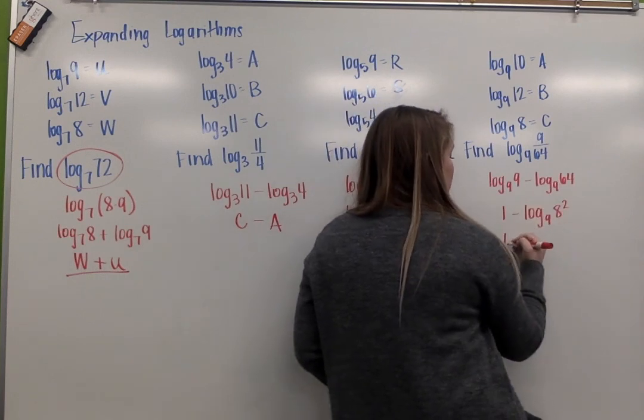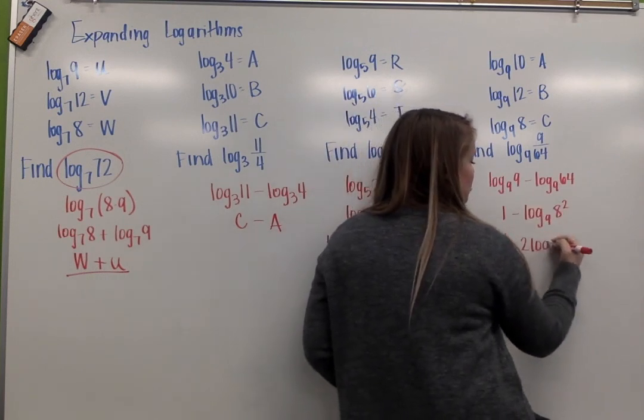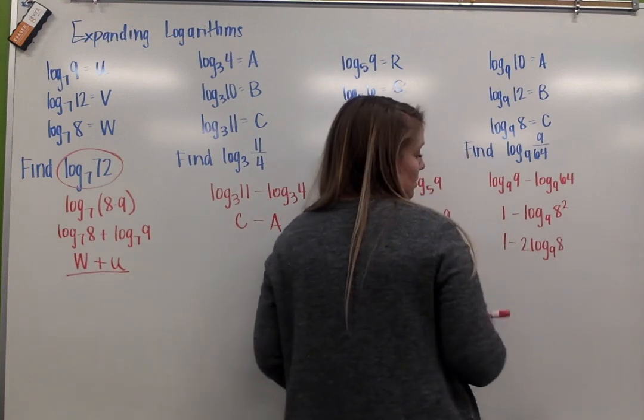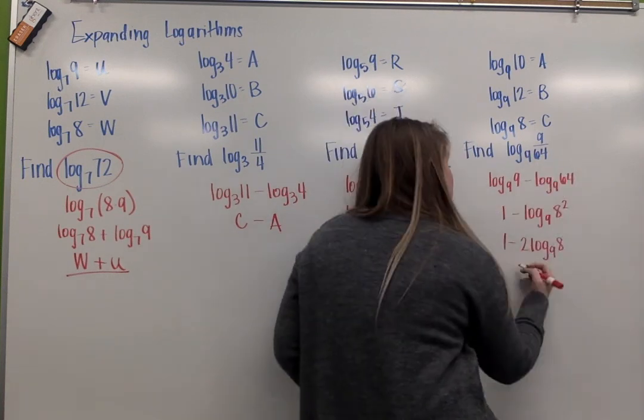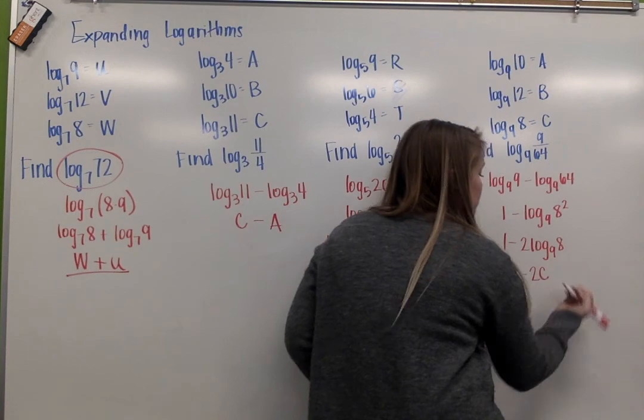So using my exponent rule here, this is the same as 2 times log base 9 of 8. Log base 9 of 8 is c, so I get 1 minus 2c.